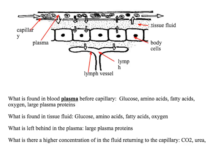A couple of questions you could be asked: what is found in the blood plasma before the capillary? Before the blood reaches the capillary bed, you've got glucose, amino acids, fatty acids, oxygen, large plasma proteins — anything that you'd find dissolved in blood plasma.